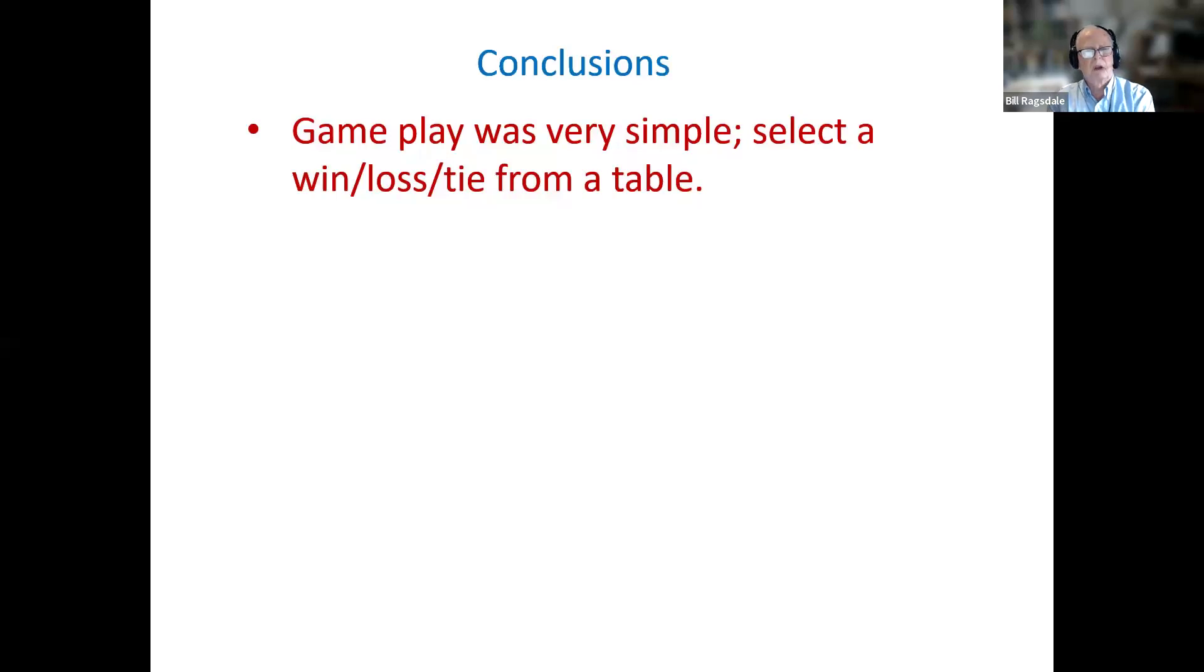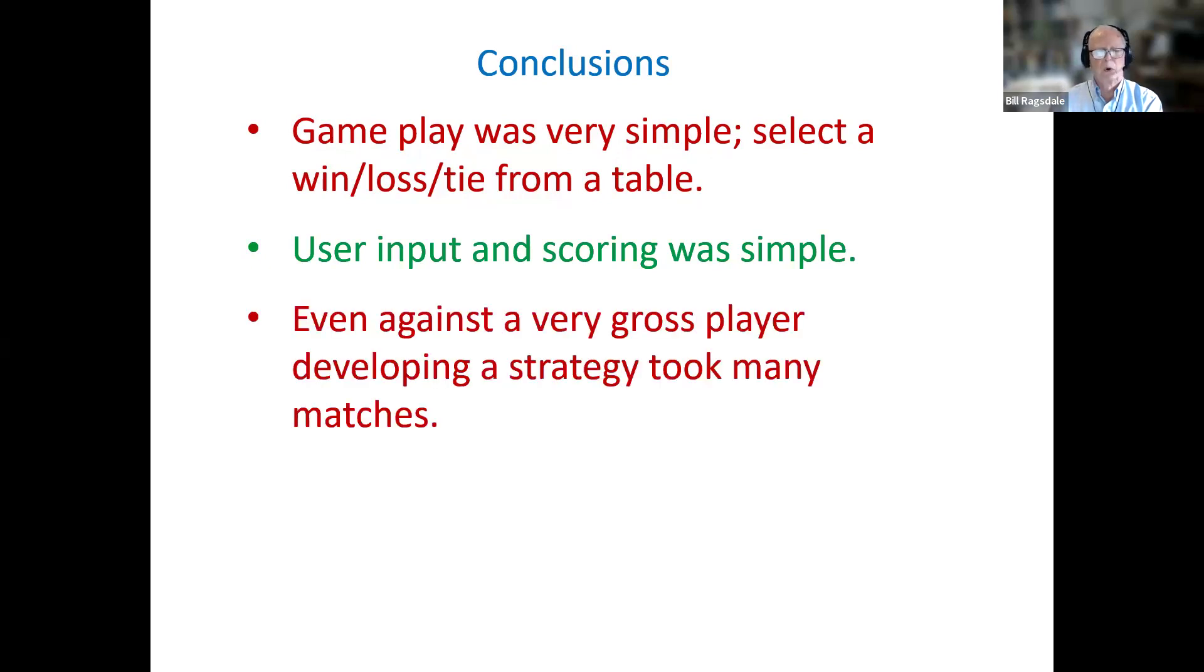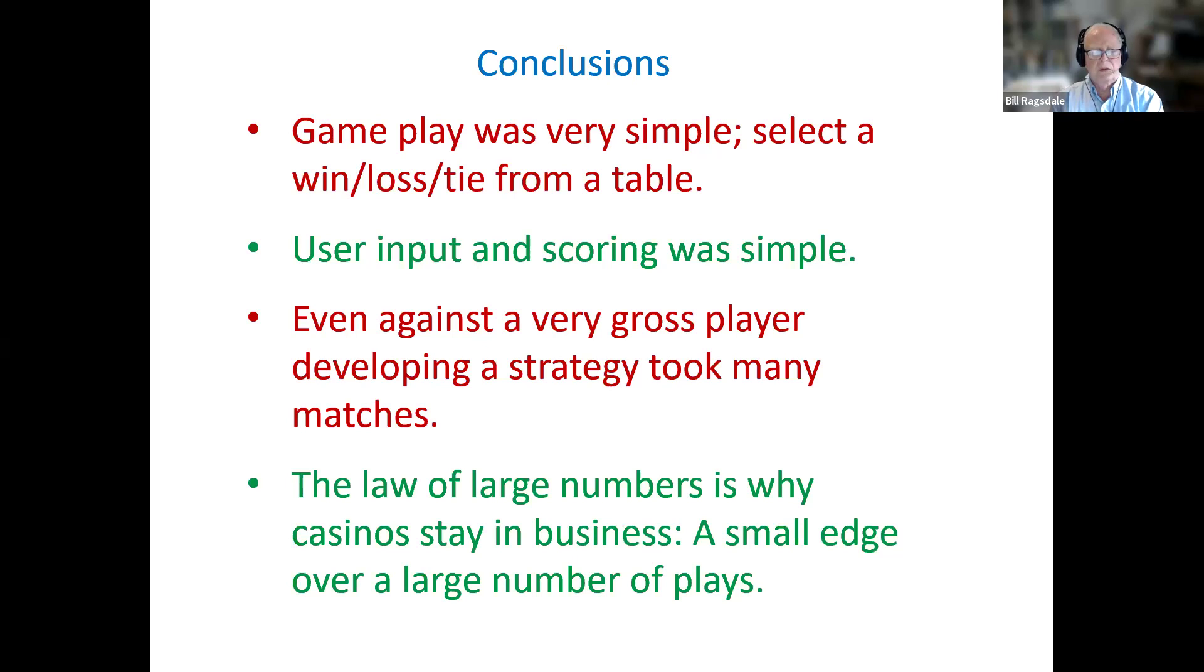So the conclusions that we can infer from all of this. Programming the gameplay was pretty simple. We had a simple win-loss-tie matrix table. Entries were updated from that table after each game. And we developed a reporting system. The scoring and reporting was quite straightforward. And we see that even against a very gross player, that is, a player who had a bias that was continuing through the game, it still took a fair number of plays to develop a winning strategy. The fact that these values do trend over a long time, a fair degree of variation along the way, but over a large number of events, the probabilities will take effect. And this small edge is why casinos stay in business. They may only have a 1% or 2% probability on winning a game, but it's inexorable. If you play long enough games, the house will win.